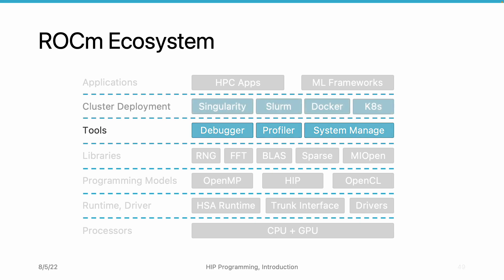Above the tool layer and the library layer, we have the cluster deployment layer. For extreme-scale computing use cases, we often want to run our programs on a cluster shared with other users. We have to manage our environment and jobs. We also have Slurm to manage resources and jobs so that all users can fairly share the computing devices. We also have Singularity and Docker as container tools, as well as Kubernetes as container management tools.